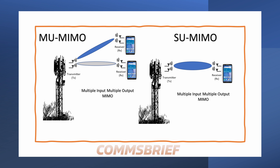Multi-User MIMO uses radio communication layers from multiple cellular network antennas to support multiple mobile devices simultaneously. Single-User MIMO, on the other hand, uses radio communication layers from multiple antennas to support a single device at a time. So what's the difference? Multi-User MIMO can support multiple devices simultaneously, whereas Single-User MIMO, as the name suggests, can support only one device at a time.